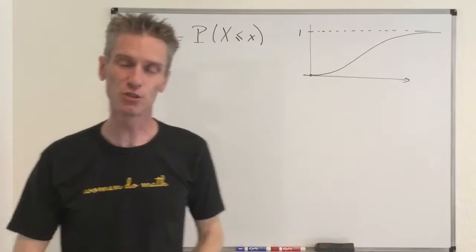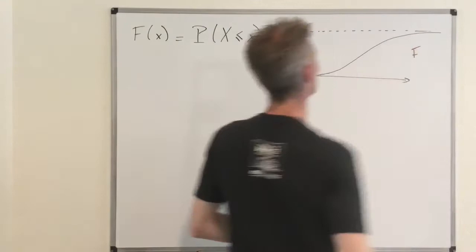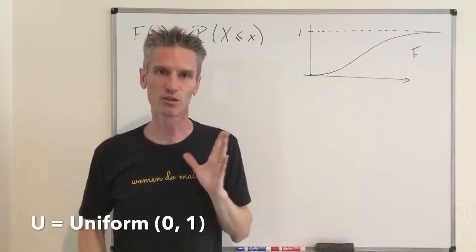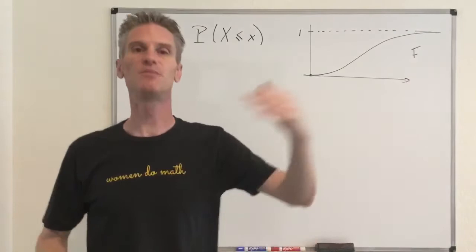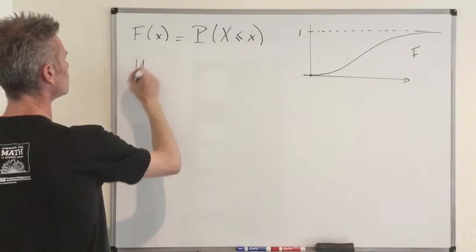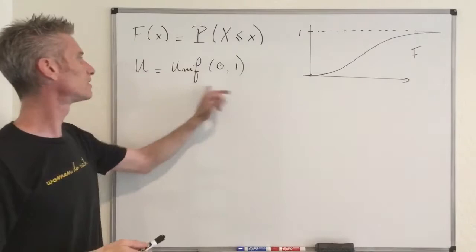Now the question is how can we generate this object, starting from the uniform random variable, uniform in the interval zero-one. Why should we start with uniform? That's because this is the thing I explained how to generate in my previous video — so I'm starting from what we already know. What we know from the previous video is how to generate a uniform random variable in the interval zero-one, which is a very good approximation of a truly continuous uniform random variable.